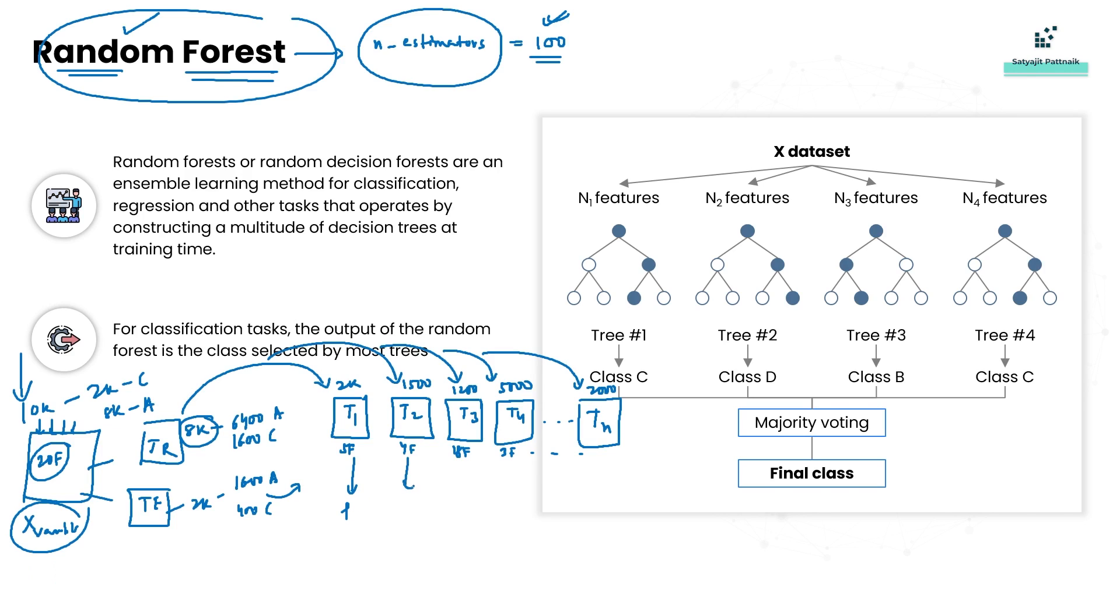They do some predictions, predictions, predictions, and finally you take voting out of it. That means for an example, one of the customer's data is passed - this tree predicted as active, active, churned, churned, churned, churned, dot dot dot, churned. So there are more voters for churned, so our final output will be this customer is likely to be churned as per this random forest.